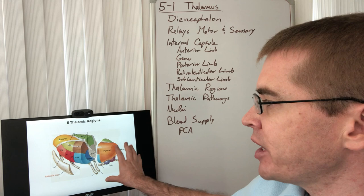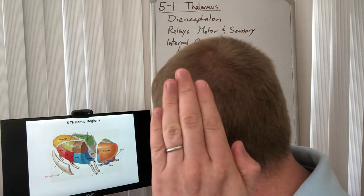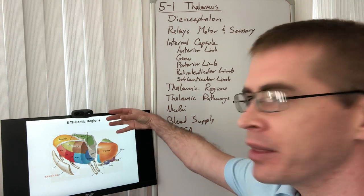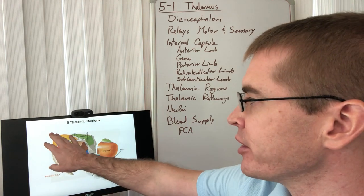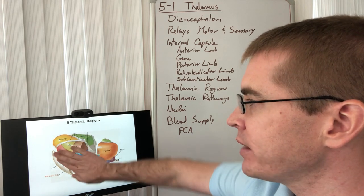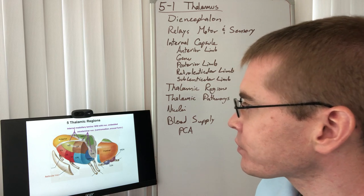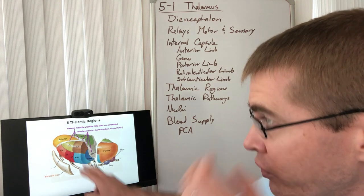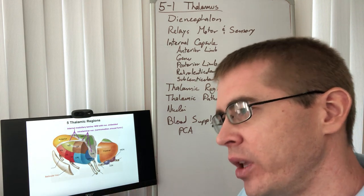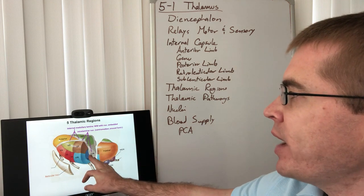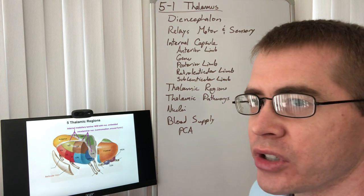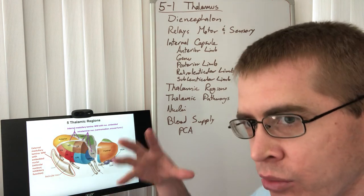Here is a posterior-lateral view of the thalamus — you're behind the person's head at a three-quarters view. The thalamus is a bilateral structure, so there would be two of these. Anterior is in front, posterior is behind. The anterior nucleus is the most anterior portion, and the pulvinar is the most posterior portion. The thalamus's regions are separated by an internal medullary lamina — a bundle of white matter tracts going into and out of the thalamus. Within these white matter tracts there are also intra-laminar nuclei, such as the centromedian nucleus.